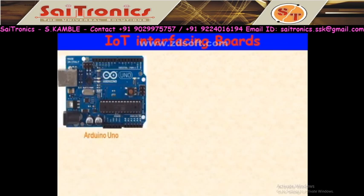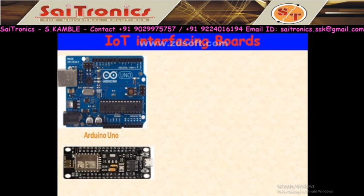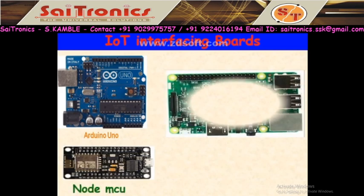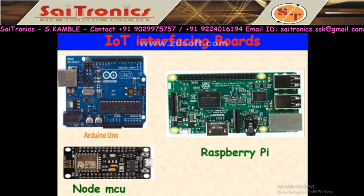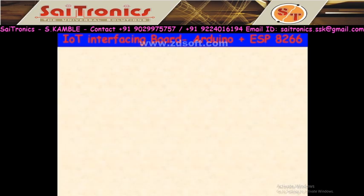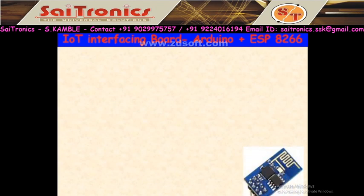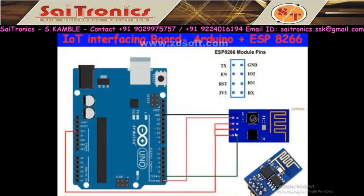We have already seen IoT boards — you know ESP8266, NodeMCU, and Raspberry Pi. In this session we are starting to learn NodeMCU. We cannot use it directly for IoT; we have to use ESP8266. Arduino plus ESP8266 is used for IoT, but wires are required and cost increases. Arduino is 500 rupees and ESP8266 is 200 rupees, so total cost is 700 rupees.